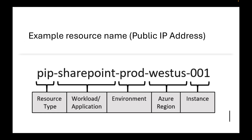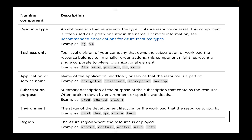Let's look at some example resource names. These are screenshots from Microsoft's documentation, which I'll link in the description. Here's a public IP address example: 'pip-sharepoint-prod-westus-001'. We start with the resource type, then the workload or application, then the environment, then the Azure region, and finally the instance number.